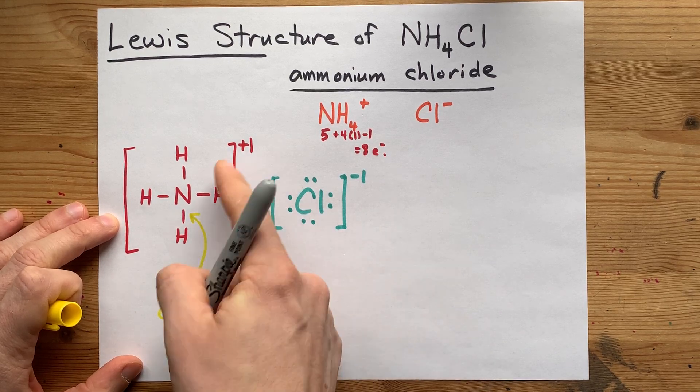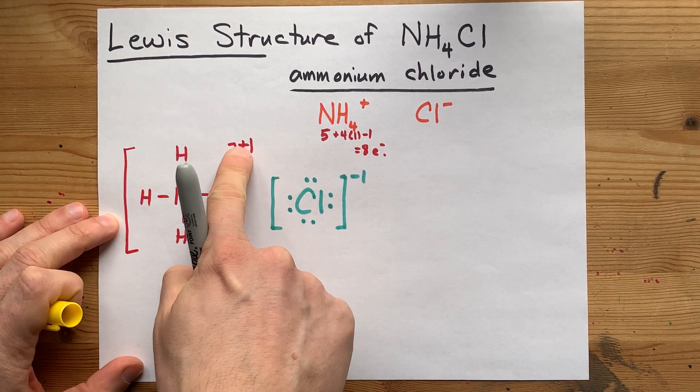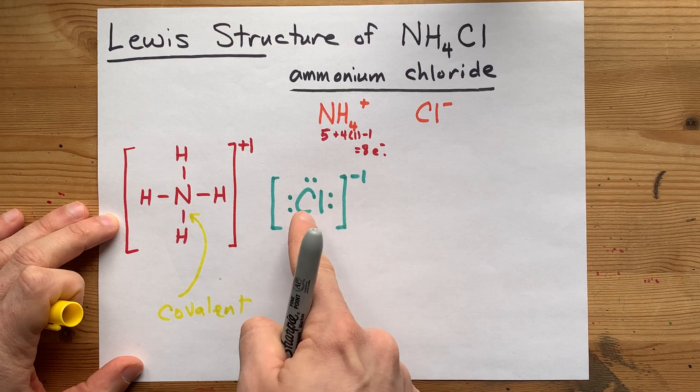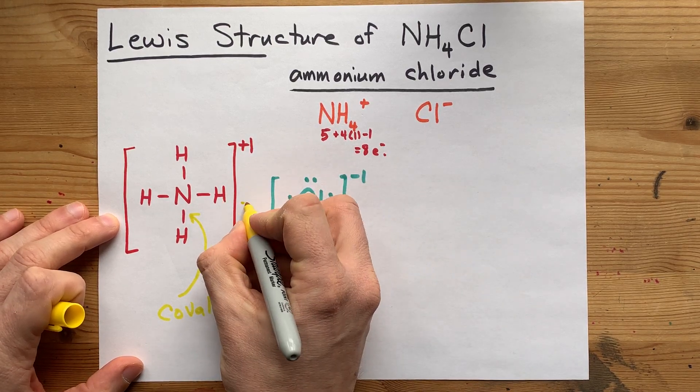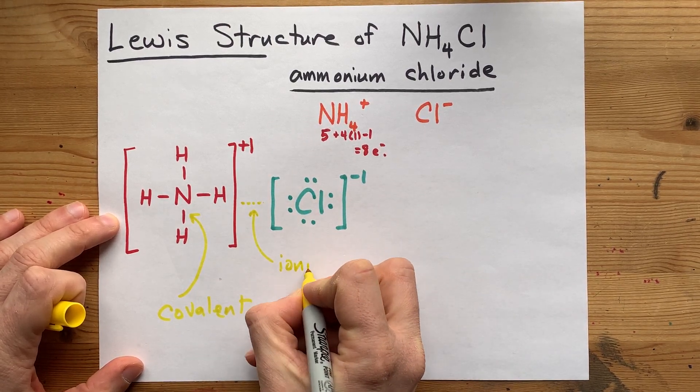But the attraction between the ammonium with a positive one charge and the chlorine with a minus one charge is an ionic bond.